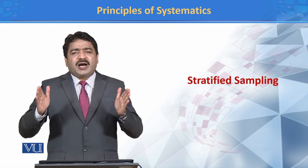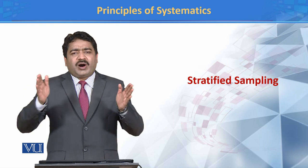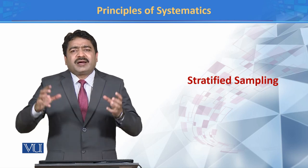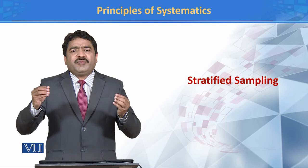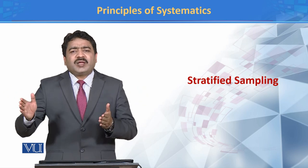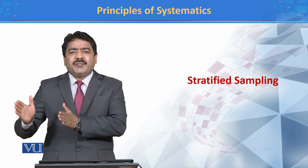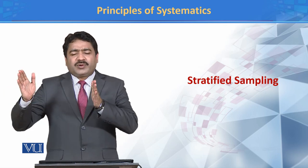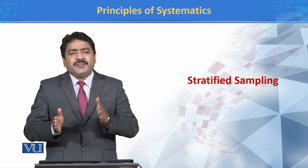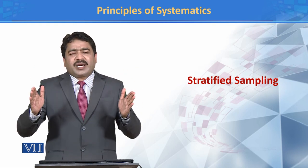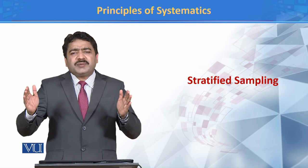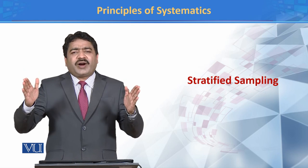तो हम क्या करेंगे: सबसे पहले हम अपनी population को divide करेंगे into various groups और strata, based on some specific criteria — जैसा कि हमने age group की base पर divide किया. फिर हम randomly لاہور की مختلف colonies या parts سے 1000-1000-1000 individuals का data collect करते हैं. 1000 افراد 1 سے 20 سال کے, उनमें से کتنے smoking करते हैं کتنے نہیں; इसी तरीके से 21 से 40 तक 1000 का data لیتے ہیں; اور 41 and above. इस किसم की जो sampling है, इसको stratified sampling कहते हैं.